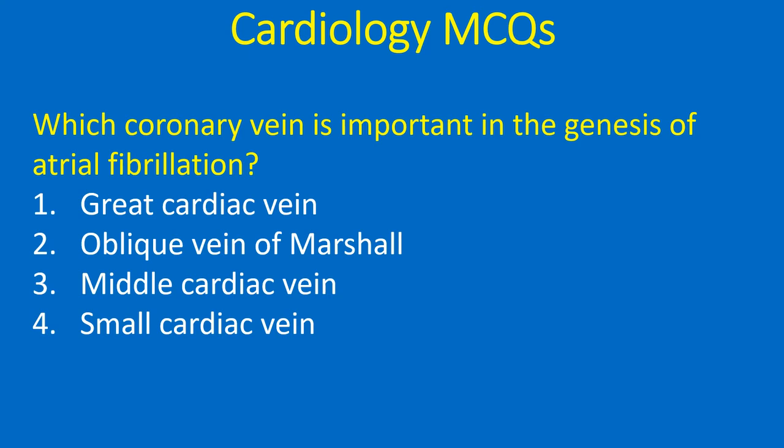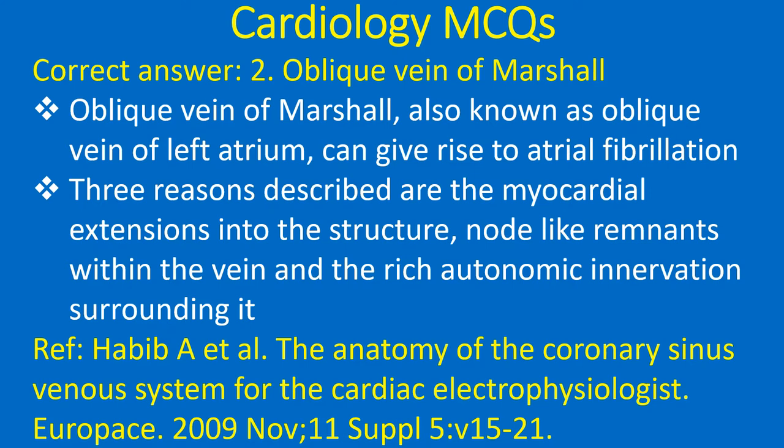Which coronary vein is important in the genesis of atrial fibrillation? 1. Great cardiac vein, 2. Oblique vein of Marshall, 3. Middle cardiac vein, 4. Small cardiac vein. Correct answer: 2. Oblique vein of Marshall. The oblique vein of Marshall, also known as the oblique vein of the left atrium, can give rise to atrial fibrillation. Three reasons described are myocardial extensions into the structure, node-like remnants within the vein, and the rich autonomic innervation surrounding it.